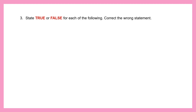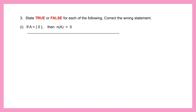Question 3: State true or false for each statement and correct any wrong statement. Statement 1: If A = {0} then the cardinal number of A is 0. That is not true, because there is one element inside. So the answer should be 1. This statement is false. The correct statement is: the cardinal number of A is 1.